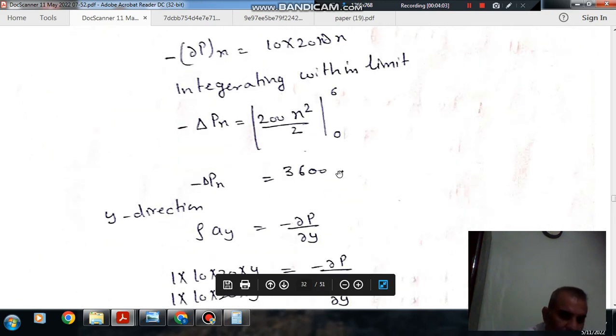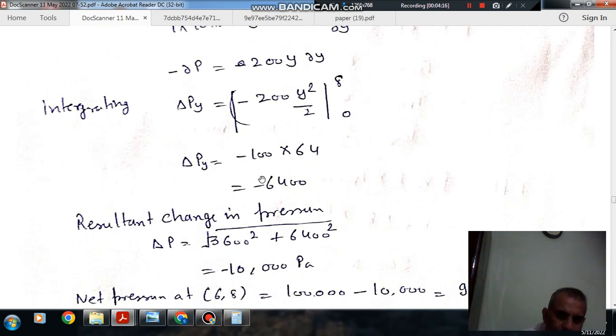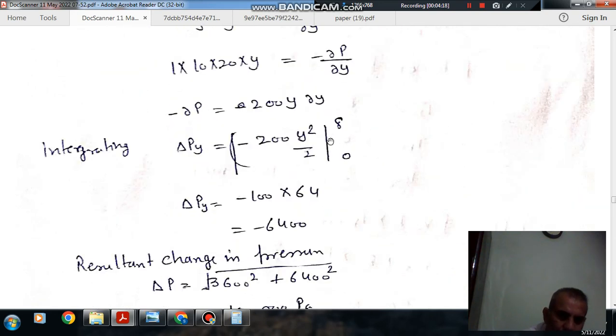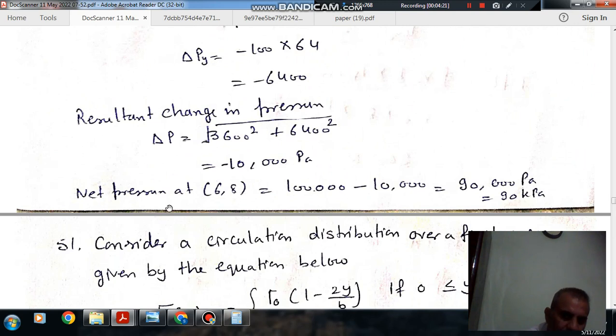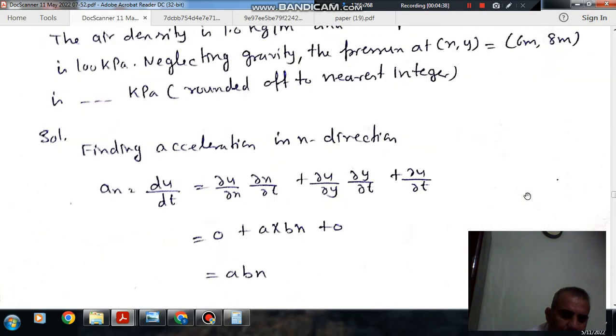In X direction it's minus 3600. So net change in pressure from (0,0) to (6,8) is minus 3600 minus 6400, taking negative sign because both are negative. That's minus 10,000 Pascal. At (0,0) the pressure is 100 kPa, minus 10 kPa gives net pressure at (6,8) of 90 kPa. So the answer is 90 kPa.